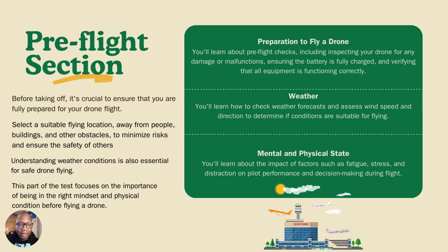The pre-flight section covers whether the location you're going to fly is suitable — is it away from people, buildings, and obstacles that minimize risk? It also teaches you how to prepare to fly your drone, talks about the weather, and covers the mental and physical state of the drone operator. It discusses fatigue, stress, and distractions while flying, giving you the mindset for what you'll be expected to comply with.